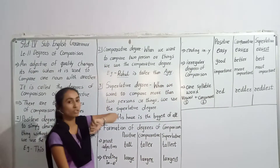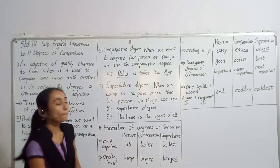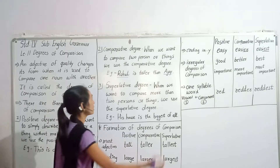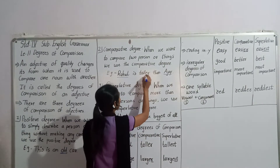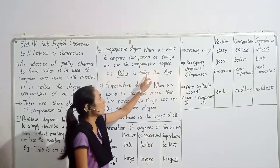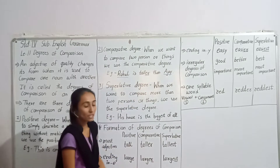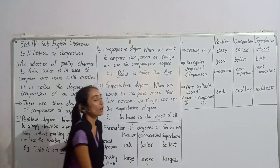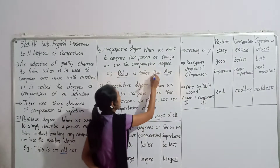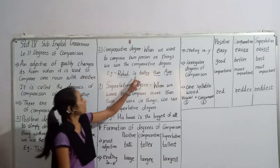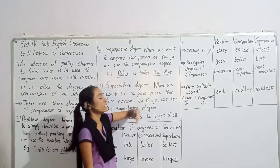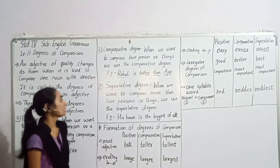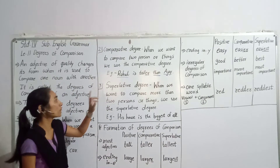When comparative degree is used in a sentence, the adjective changes its form. The suffix '-er' is added to the adjective word in the comparative degree.